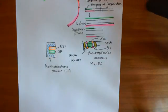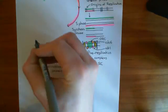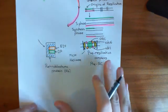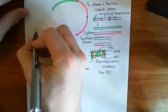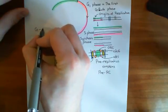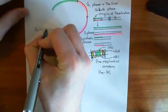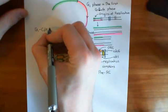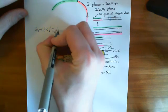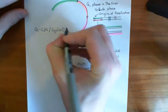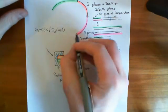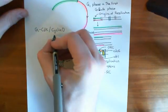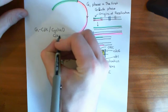The main thing which inactivates the retinoblastoma protein is an enzyme known as the G1 CDK. It's called the G1 CDK, but you're probably more likely to hear people call this the cyclin D-CDK4 complex.